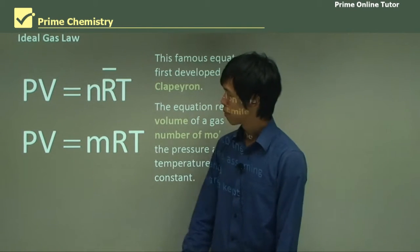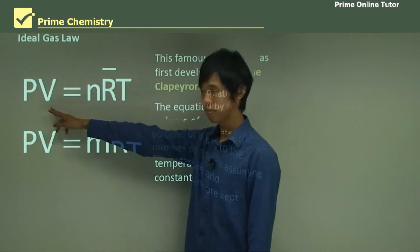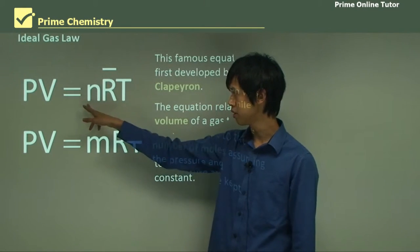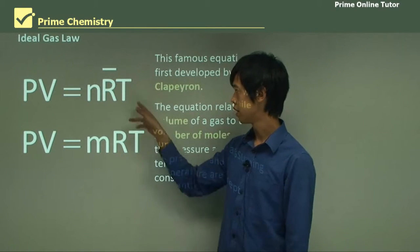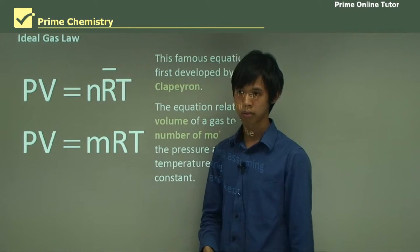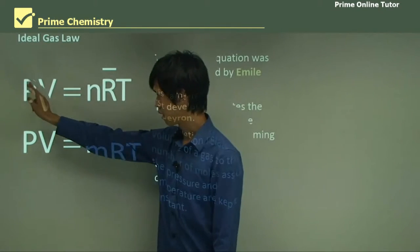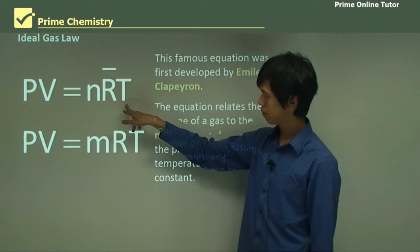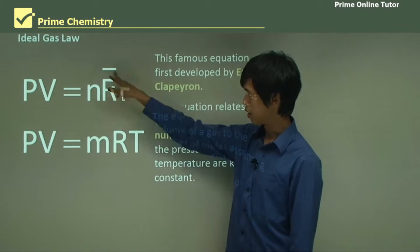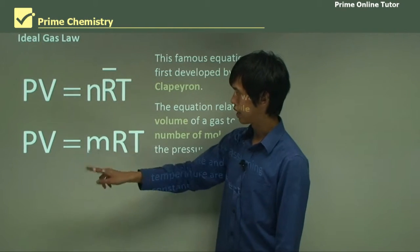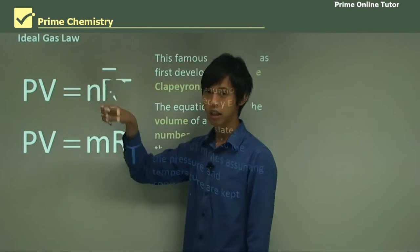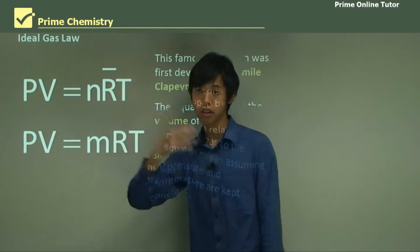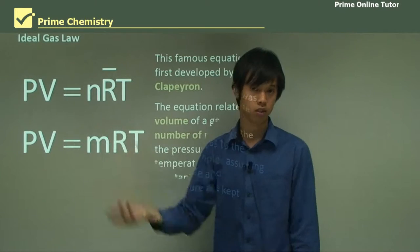So you can see pressure times volume equals the number of moles, N, times this R, which is a constant, times the temperature. So if you keep this constant and this constant and you know this is a constant, then if you know the number of moles, then you know the volume, or if you know the volume, you know the number of moles, one or the other.